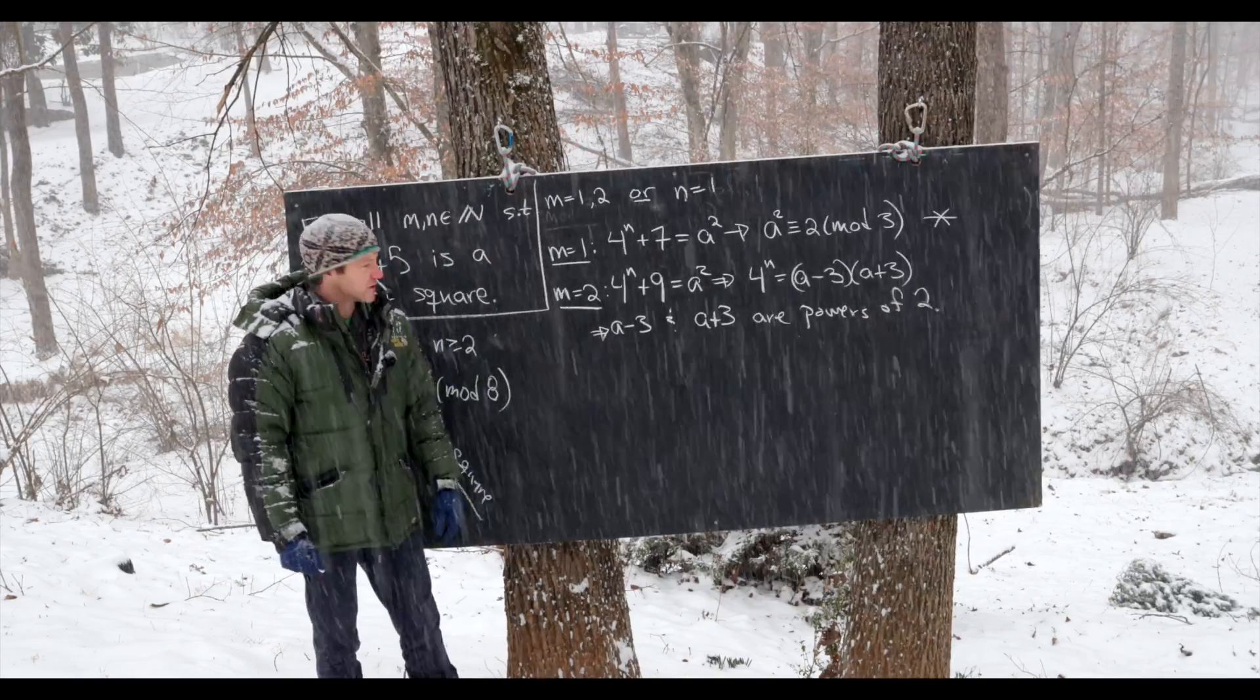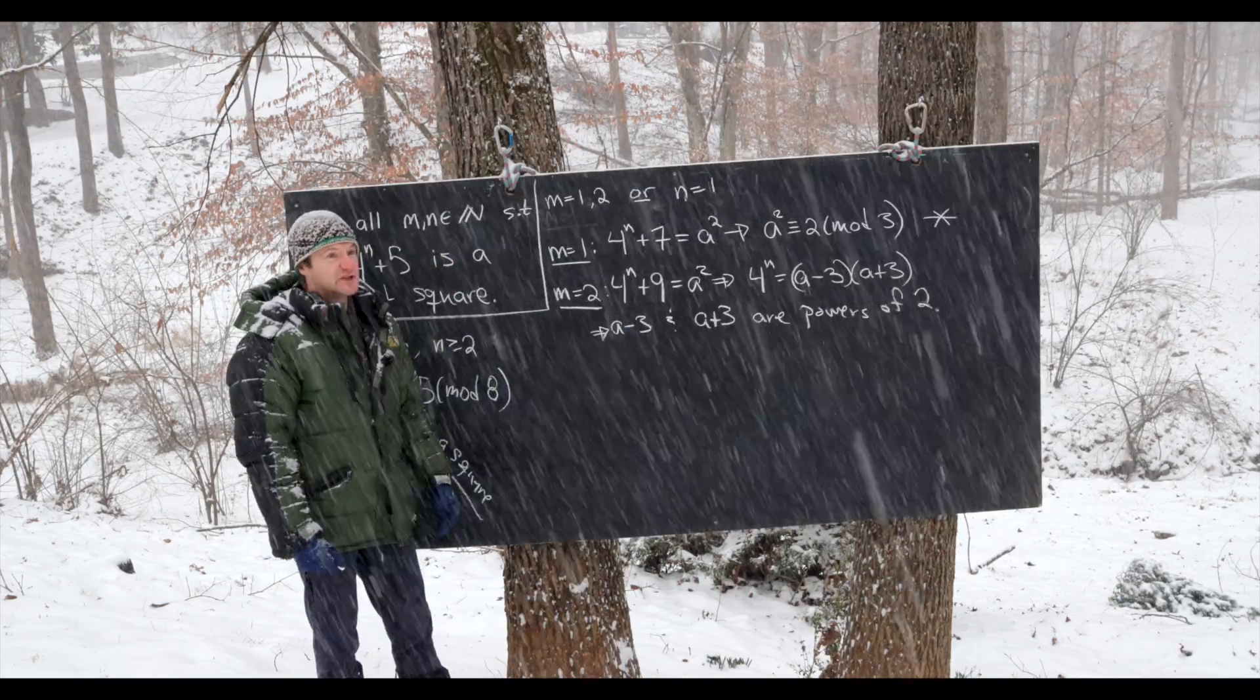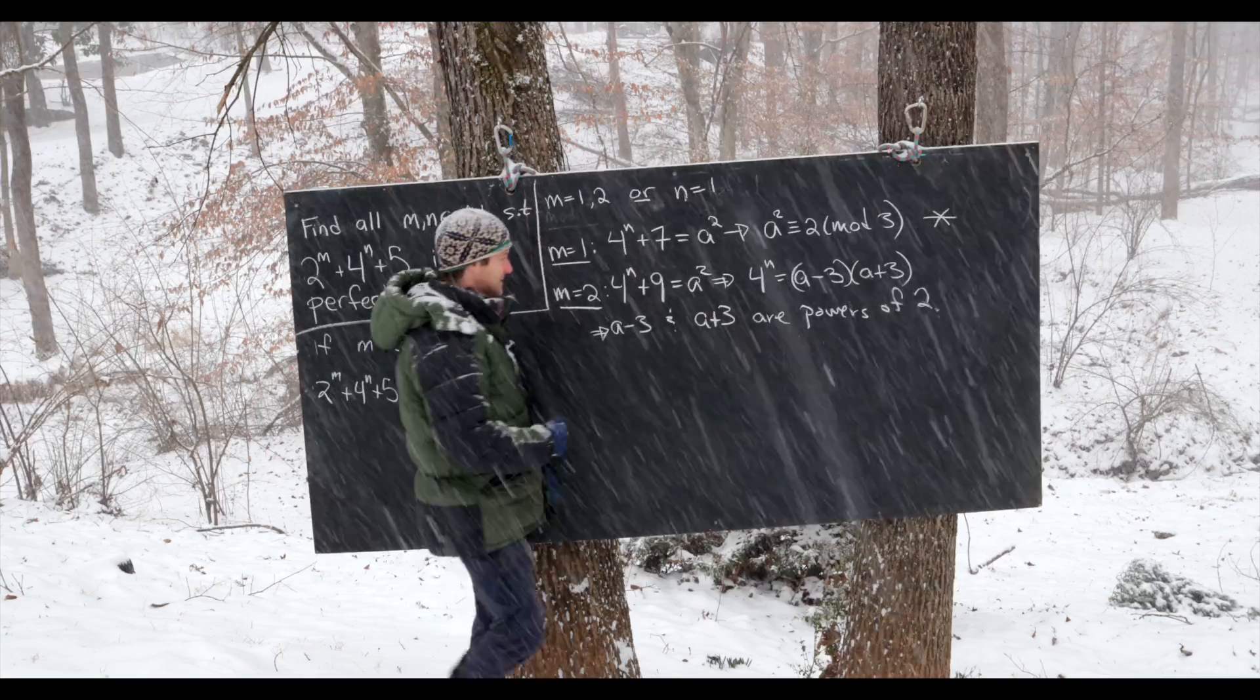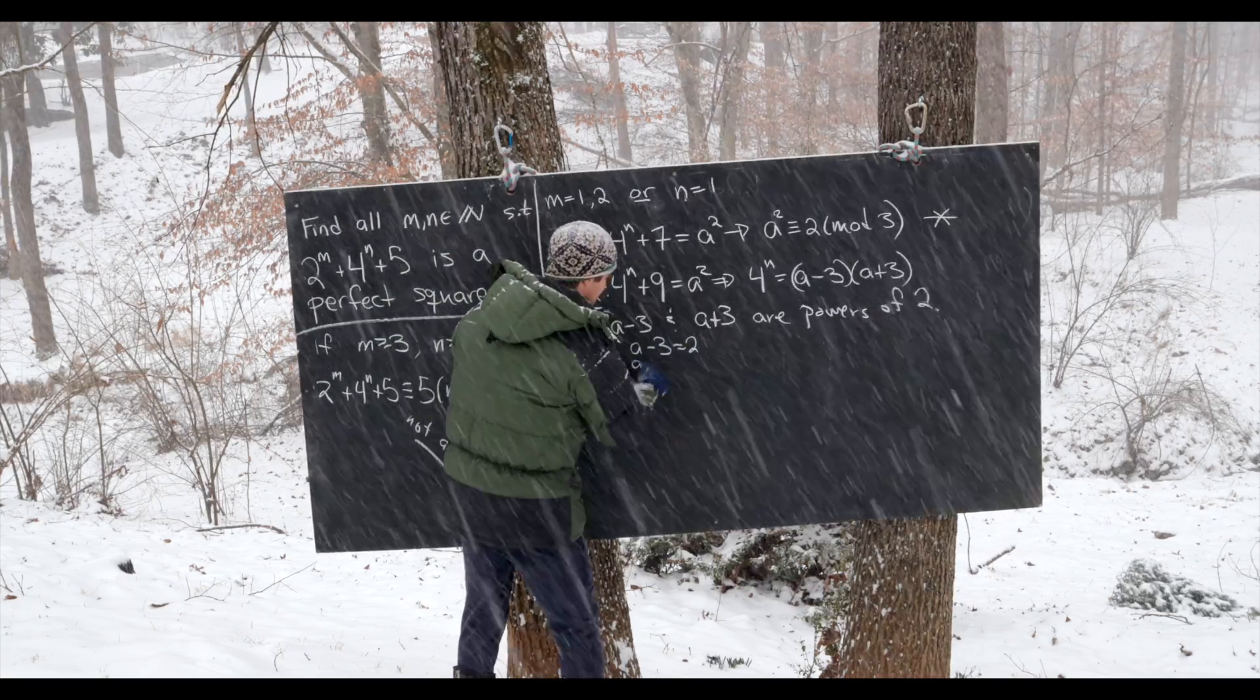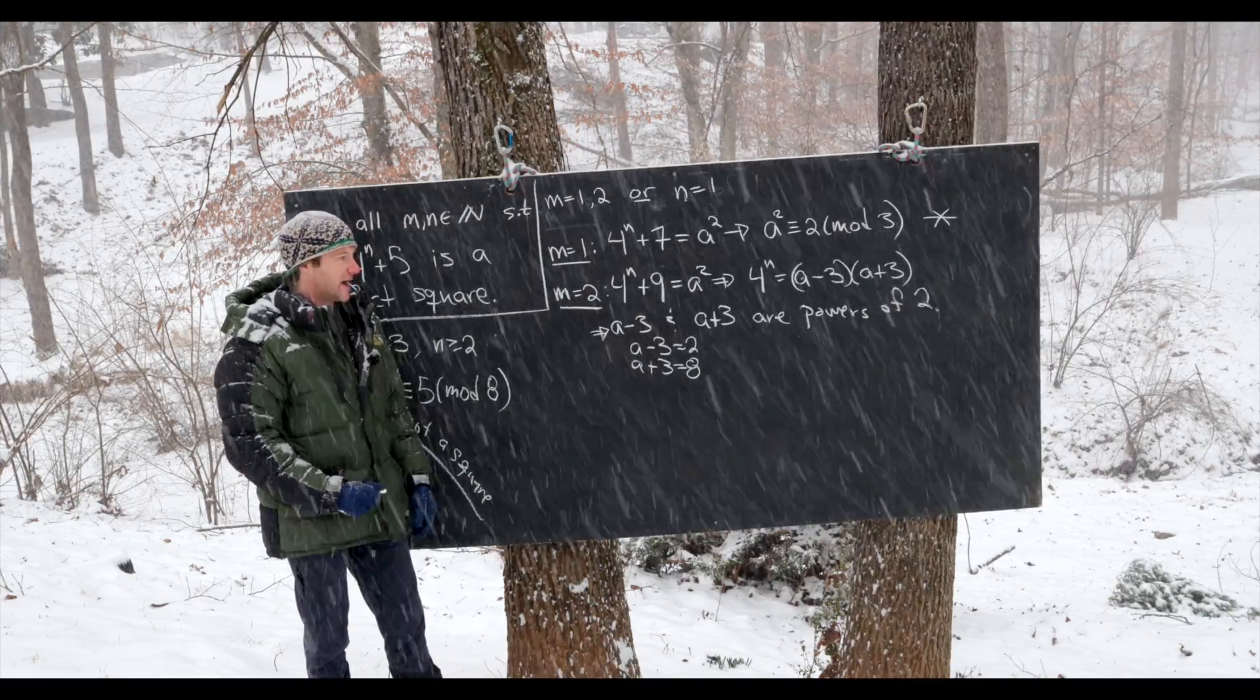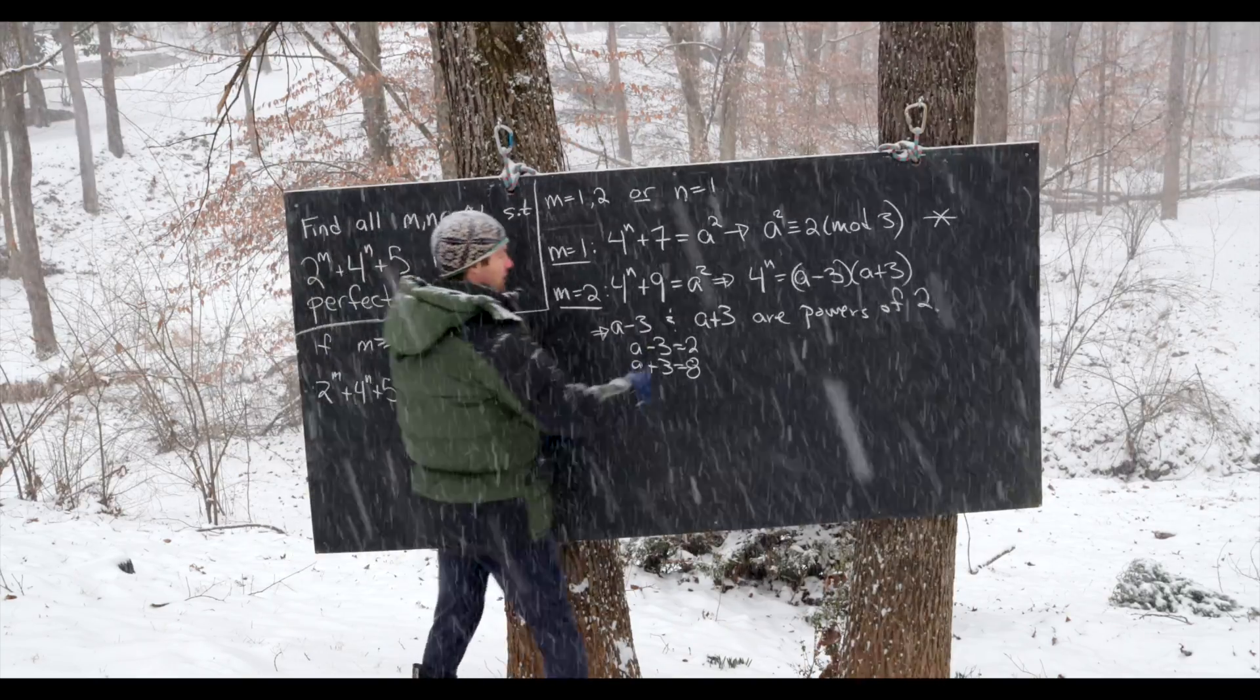Furthermore, there are powers of 2 that differ by 6. But there are only two different powers of 2 that differ by 6 and that's the number 2 and the number 8. So that means a minus 3 is equal to 2 and a plus 3 is equal to 8. Like I said, those are the only two powers of 2 that differ by 6. We know they differ by 6 because a minus 3 to a plus 3.